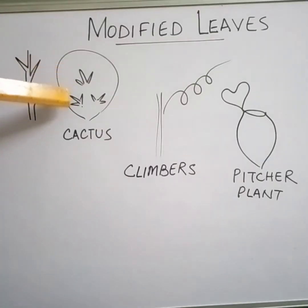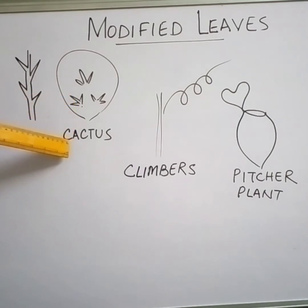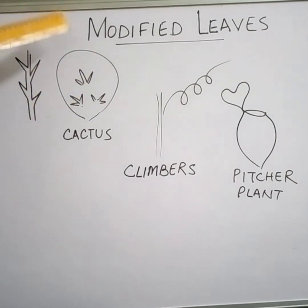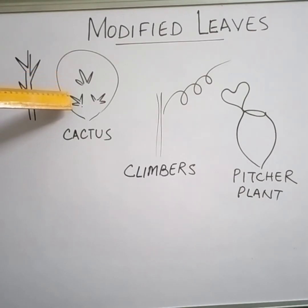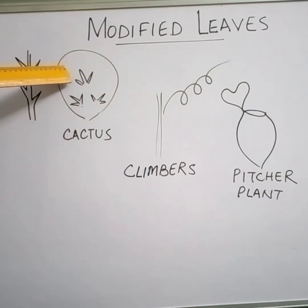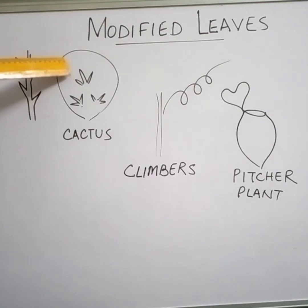Cactus is found in deserts where there is less water, so the leaves change into spines so that transpiration does not take place. But then the leaves cannot make food, so the stems are fleshy and green in color to store water. The fleshy stems store water and the green part prepares food.